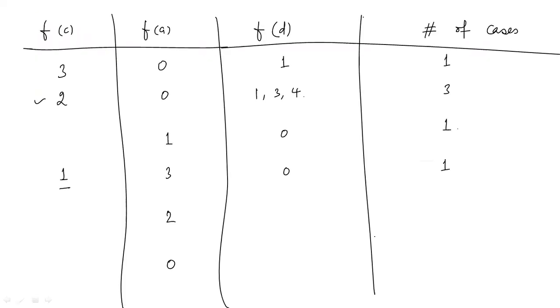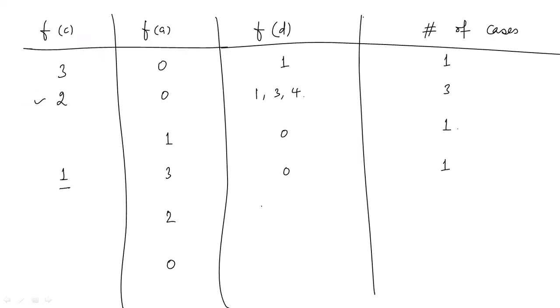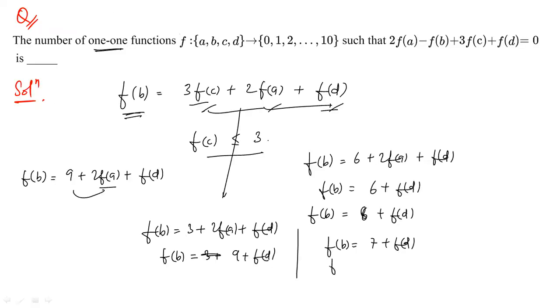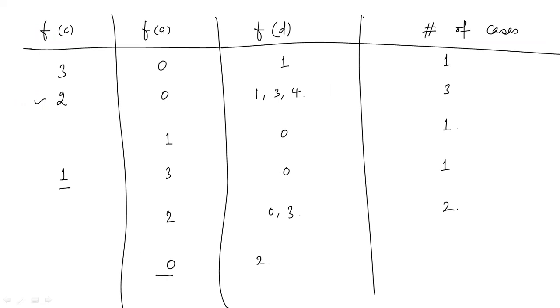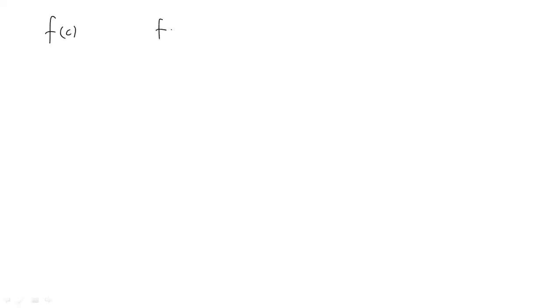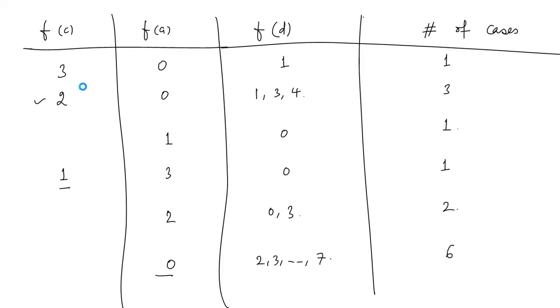Continuing case f(c) = 1: When f(a) = 2: f(b) = 7 + f(d), and f(d) can be 0 or 3 (1 and 2 are taken) — two cases. When f(a) = 0: f(b) = 3 + f(d), and f(d) can be 2, 3, 4, 5, 6, or 7 (0 and 1 are taken) — six cases. Total for f(c) = 1: ten cases.